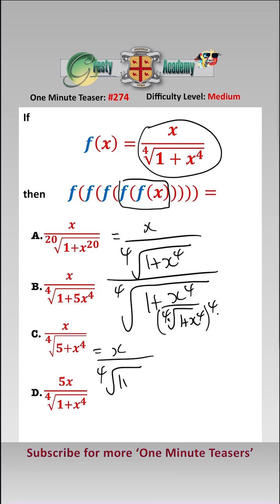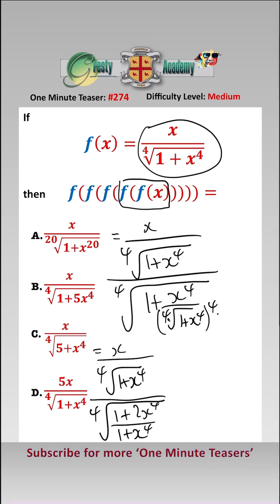That gives us x over the fourth root of 1 add x to the 4, over the fourth root of 1 add 2x to the 4 over 1 add x to the 4. That cancels with that, which leaves us with x over the fourth root of 1 add 2x to the 4.